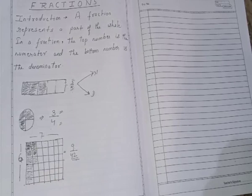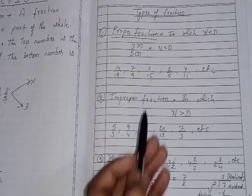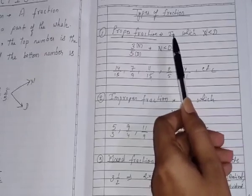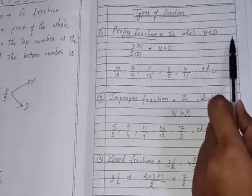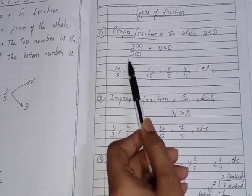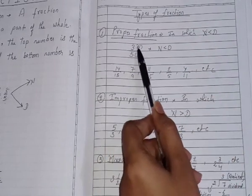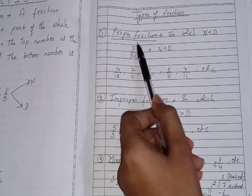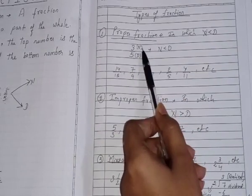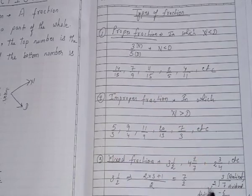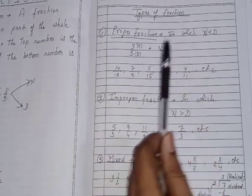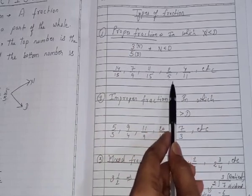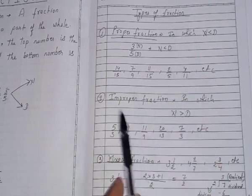Now, let's talk about types of fraction. The types of fraction: First type is proper fraction. What is proper fraction? In which the numerator is smaller than denominator. If in a fraction, its numerator is smaller than denominator, like 3 by 5, in which 3 is smaller than 5, it means it is proper fraction. These are some examples of proper fraction you can write like 14 by 15, 7 by 9, 11 by 15, 2 by 5, 4 by 11, etc.